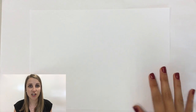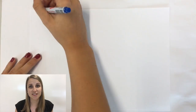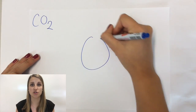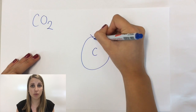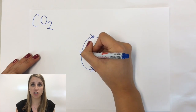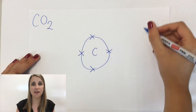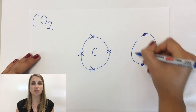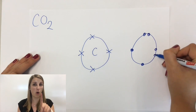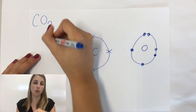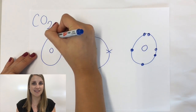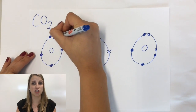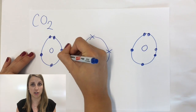The first example we're going to look at today is carbon dioxide. The first thing we're going to do is draw out the outer electronic configurations for the carbon and two oxygens. Remember, the same rules apply — the atom that I've got one of is the one that I'm going to put in the middle. So the carbon goes in the middle, surrounded by the two oxygens.